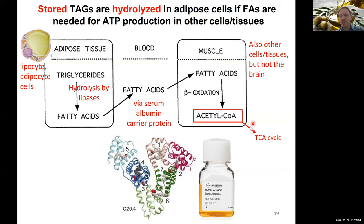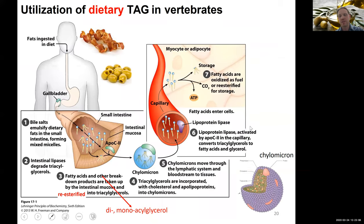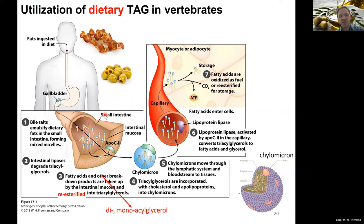That's what happens with your stored TAGs. For dietary TAGs it's quite different, even though we use the same chemical logic. Assume you've just eaten a fat-rich diet — bacon or olives, both very rich in fat. The core process starts in the small intestine, where bile salts emulsify these dietary fats, breaking large fat and lipid droplets into small micelles, similar to dish soap, increasing surface area so enzymes can access them.